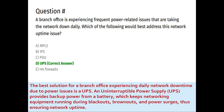Next question: a branch office is experiencing frequent power-related issues that are taking the network down daily. Which of the following would best address this network uptime issue? Option A: MPLS, Option B: ISP, Option C: PDU, Option D: UPS, Option E: HA firewalls. The correct answer is D: UPS. A UPS (Uninterruptible Power Supply) provides backup power from a battery, keeping networking equipment running during blackouts, brownouts, and power surges, thus ensuring network uptime.